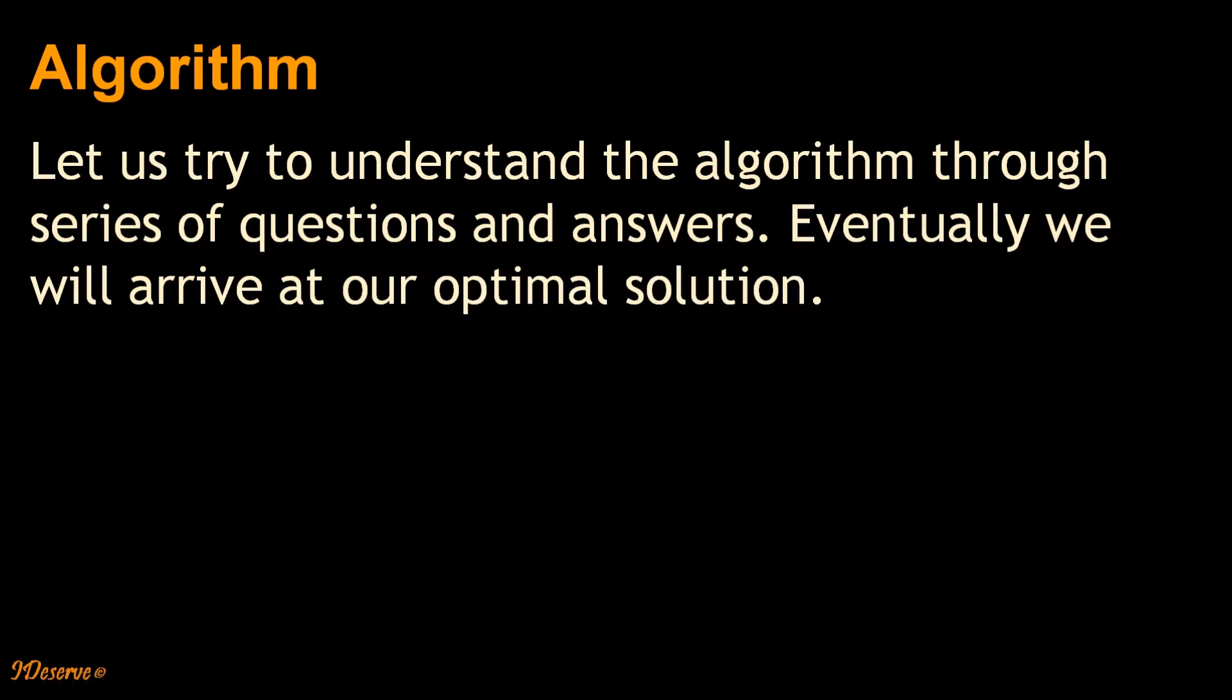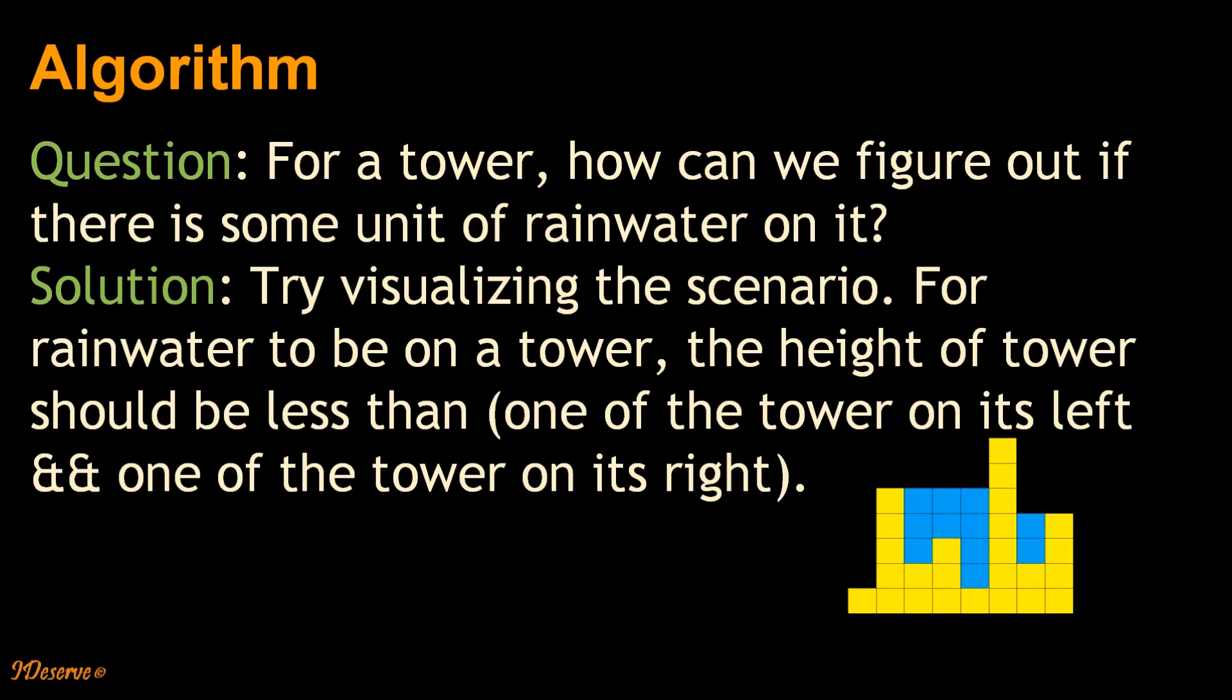Let us try to understand the algorithm through a series of questions and answers. Eventually we will arrive at our optimal solution. The first question is: for a tower, how can you figure out if there is some unit of rain water on it? So let us try to visualize the scenario.